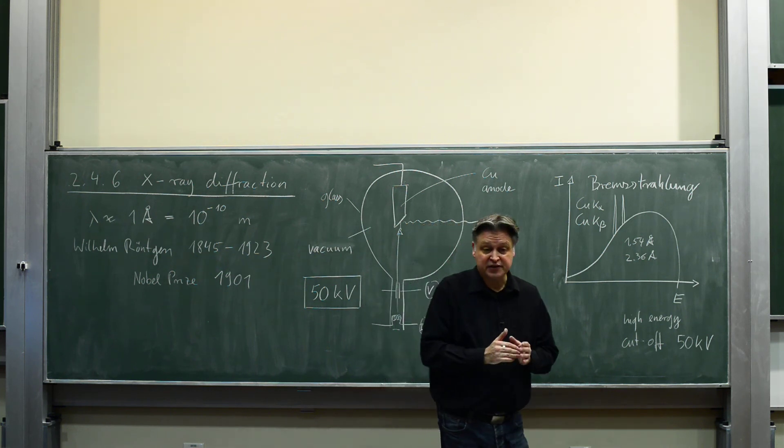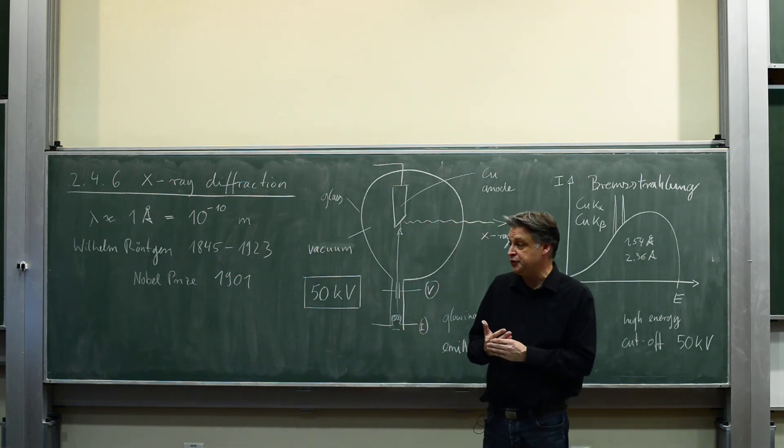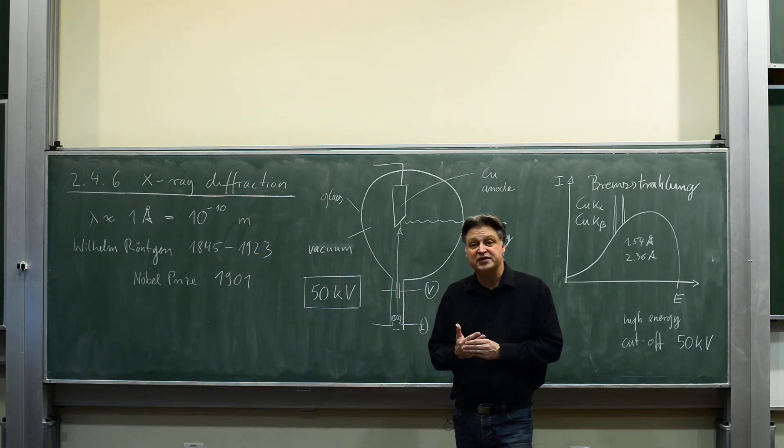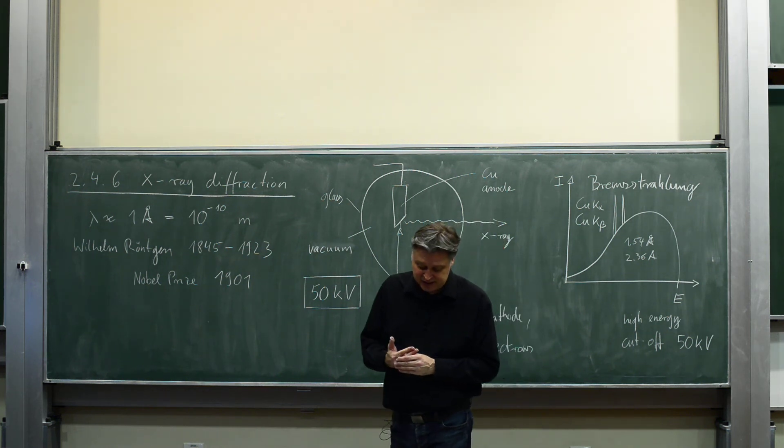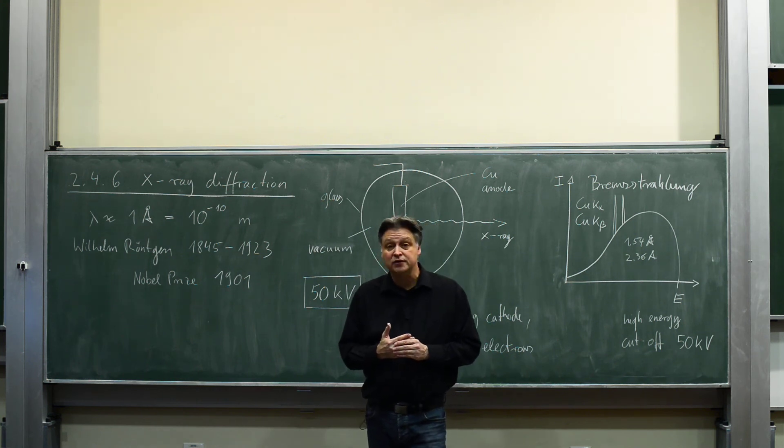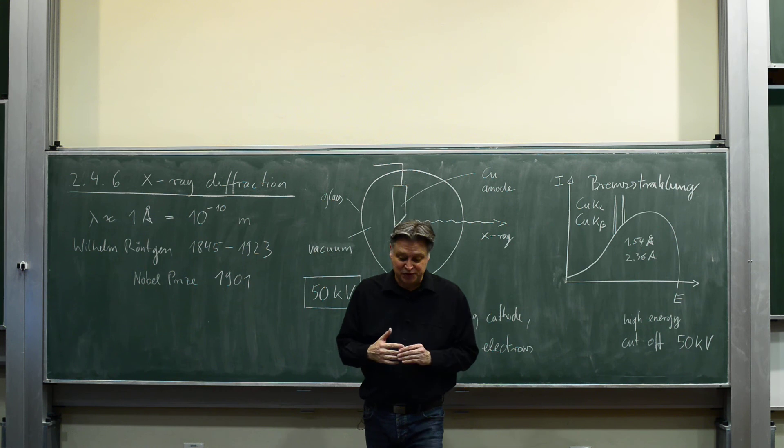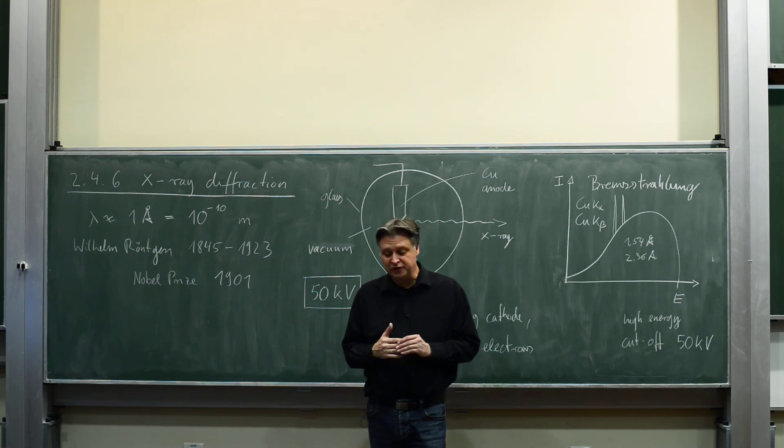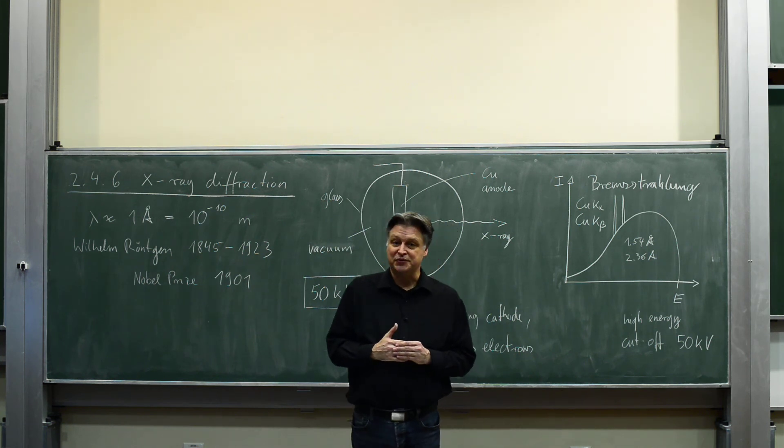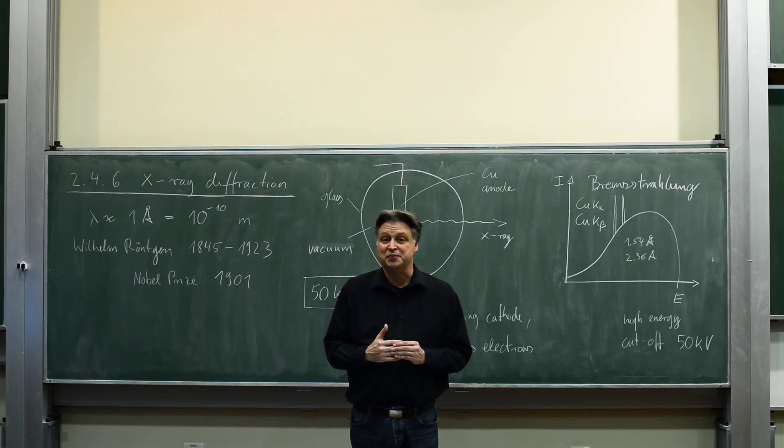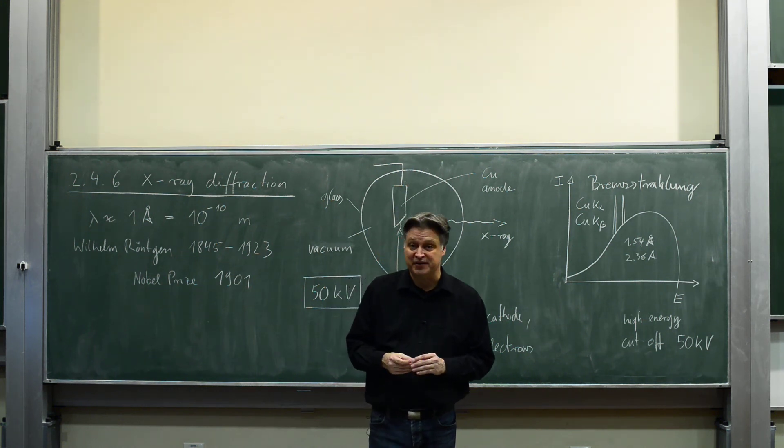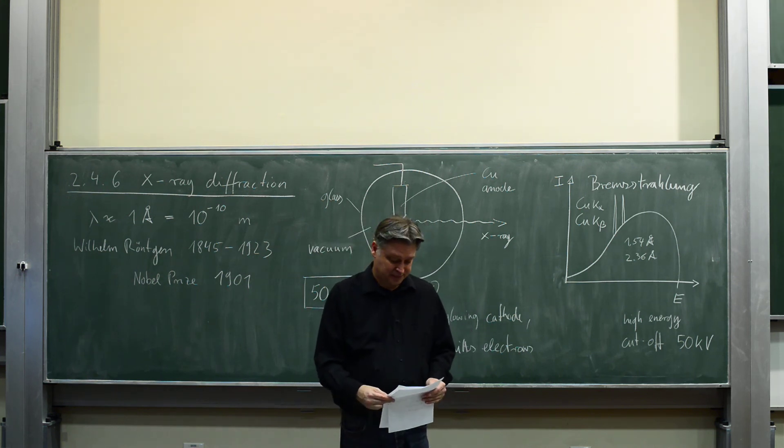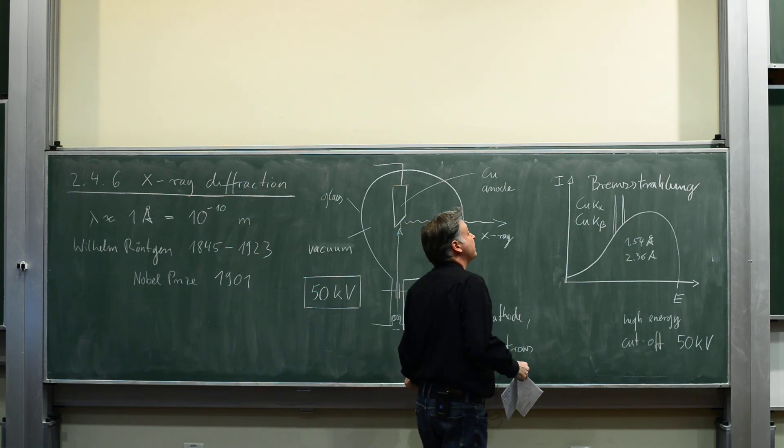One side note before I derive Bragg's law for you. Bragg, these were actually two persons, father and son, William Bragg and Lawrence Bragg. While Lawrence Bragg was a British scientist, William Bragg was born in Adelaide. So you could actually say Bragg's law, that's the first Australian Nobel Prize.